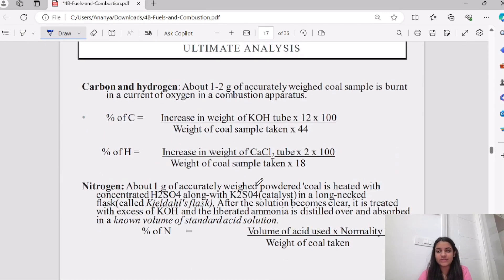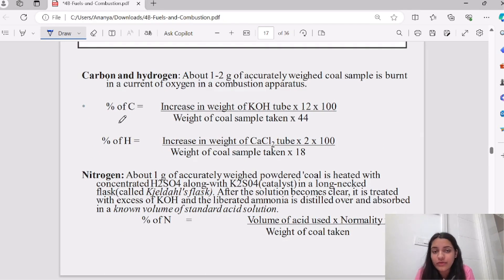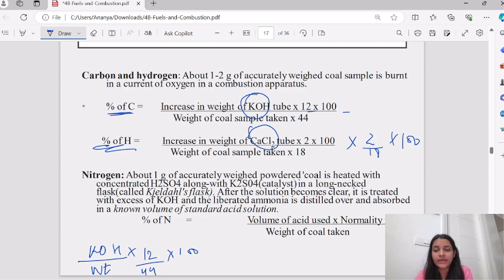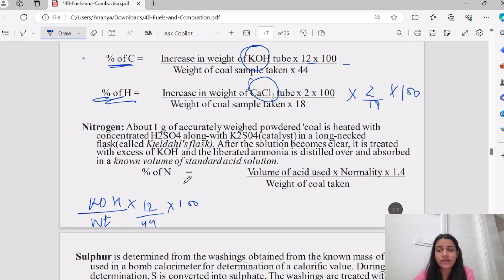Let's look at ultimate analysis. First is how carbon and hydrogen are released when we burn about half a gram weight of coal sample in a combustion apparatus. Percentage of carbon: increase in weight of KOH multiplied by 12 by 44 multiplied by 100 upon weight of coal sample. Percentage of hydrogen: increase in weight of calcium chloride multiplied by 2 by 18 multiplied by 100.